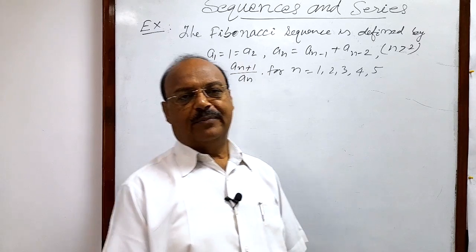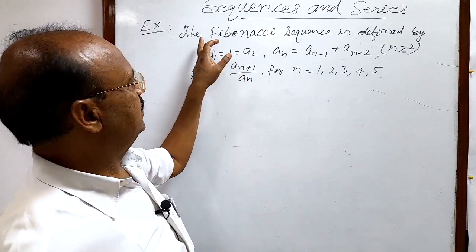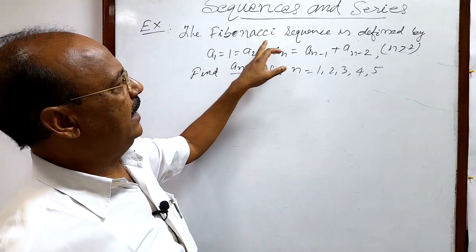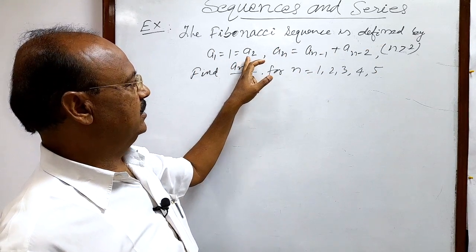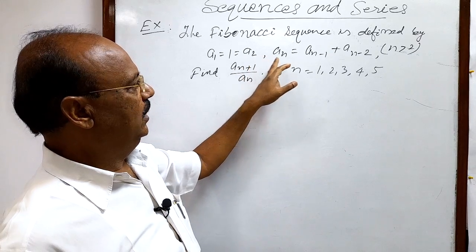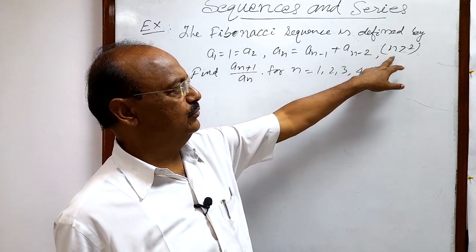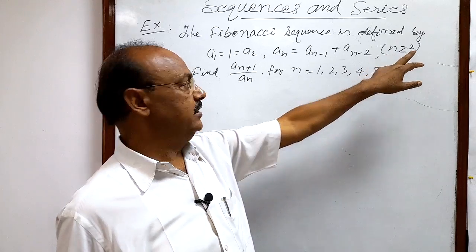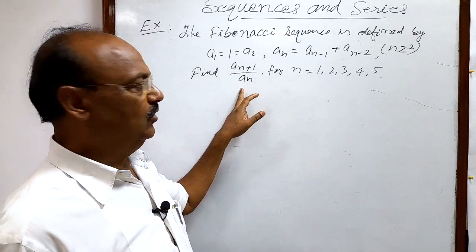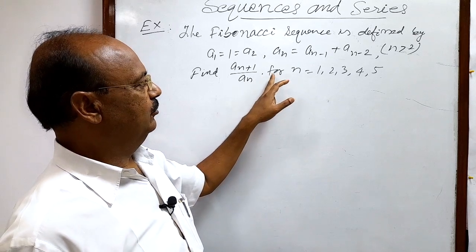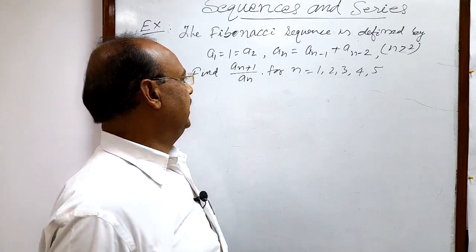Let us see a very important question from the topic sequences and series. The Fibonacci sequence is defined by a1 = 1 = a2, and a(n) = a(n-1) + a(n-2) for n greater than 2. We have to find the value of a(n+1) / a(n) for n = 1, 2, 3, 4, 5.